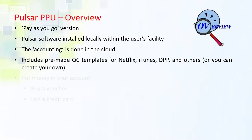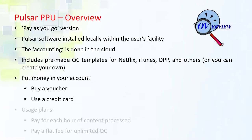You put money in your account either by buying a voucher from us or your local reseller, or using your credit card. Then you choose from our two usage plans: either paying per hour of content that you QC, or a monthly flat fee for unlimited QC.